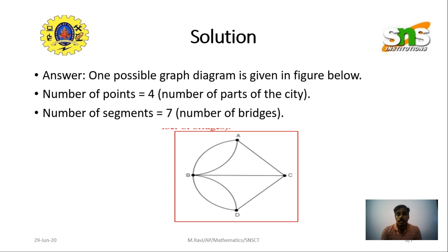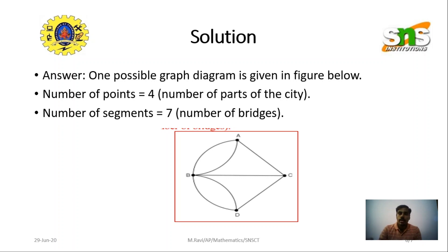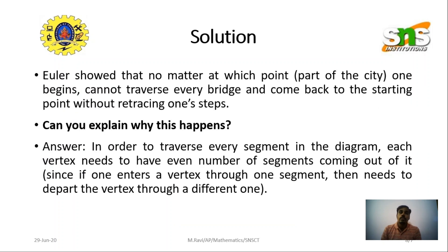This problem has a solution only if each vertex is of even degree. Looking at the graph: vertex A has 3 edges, vertex C has 3 edges, vertex D has 3 edges, and vertex B has 5 edges — all vertices are of odd degree. Since all vertices have odd degrees, it is impossible to start from a point, travel all edges exactly once, and return to the same point. Euler is therefore considered the father of graph theory.